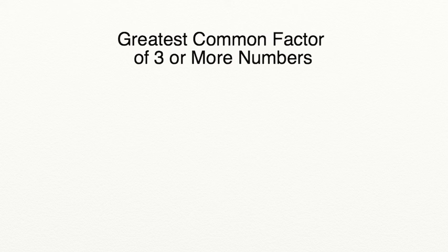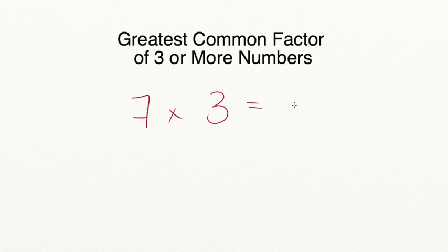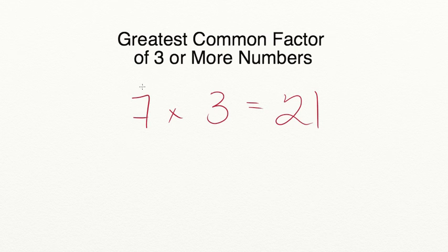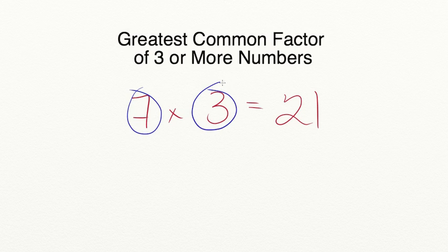A factor is a number that you multiply by another number to equal a product. For example, if we were multiplying 7 times 3 to get a product of 21, our factors in this equation are 7 and 3, because they are the numbers that we're multiplying together to get 21.